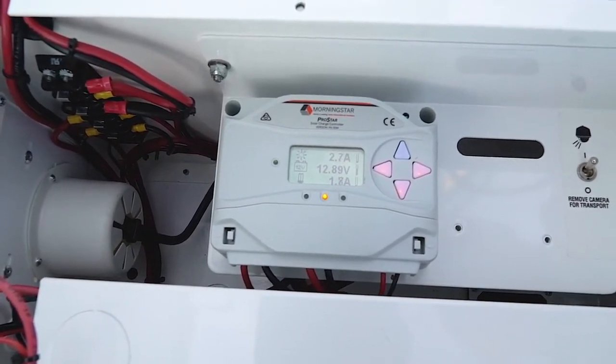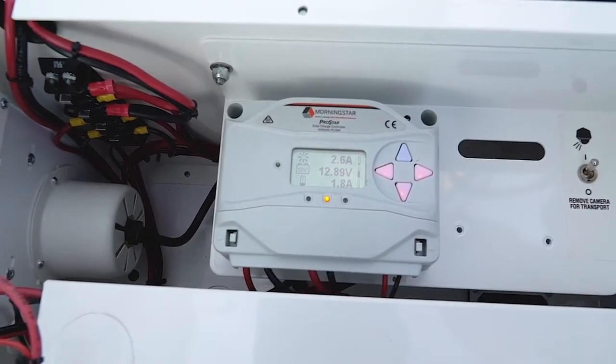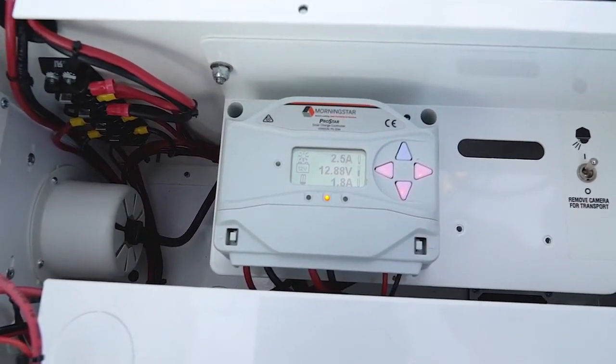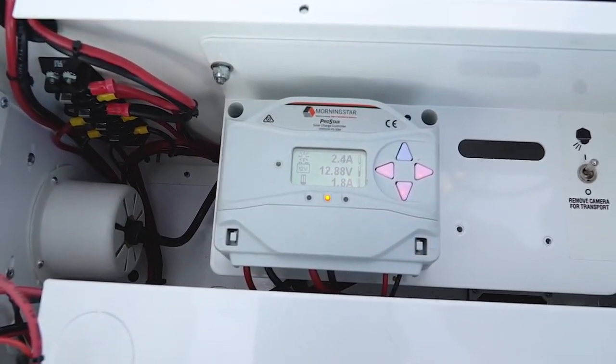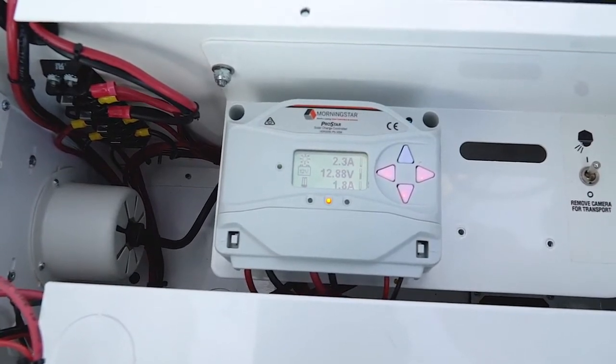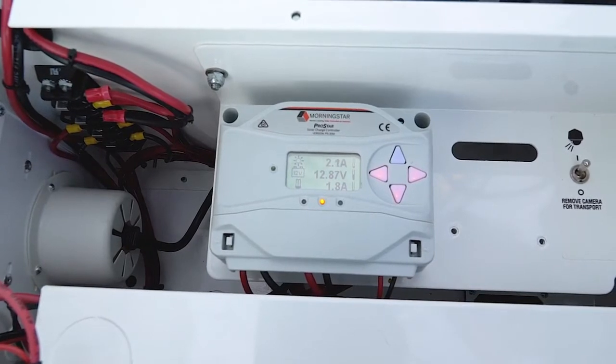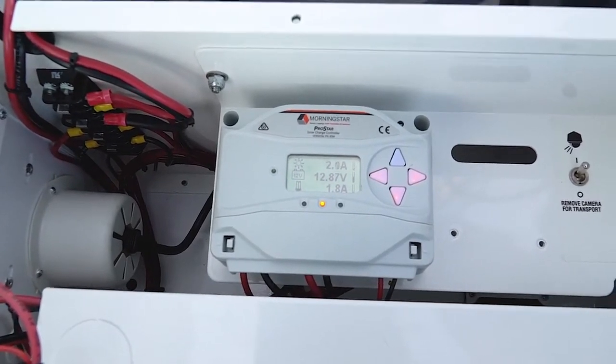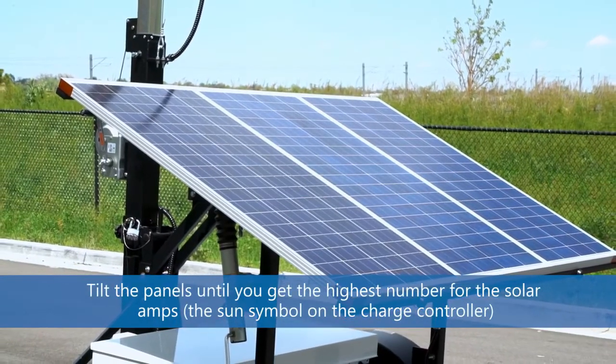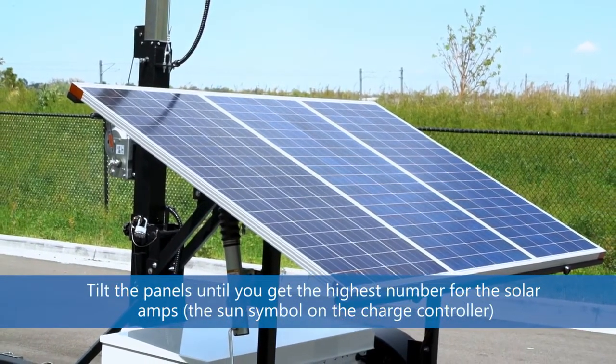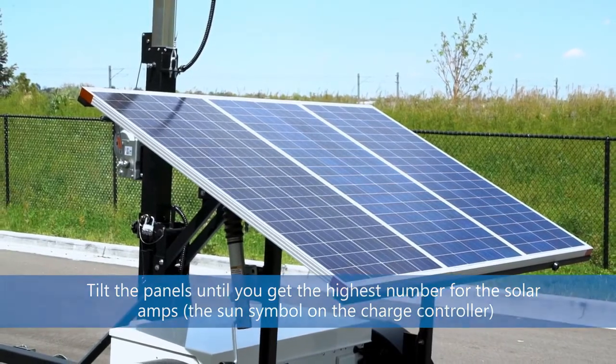So on the sun we have 2.5, batteries 12.88, and the load we have 1.8. This is all the information you really need to position your trailer properly in order to get the best sun numbers. Tilt your solar panel till the number goes up to the maximum number that you can crank it to and then you'll be good to go.